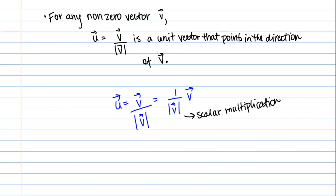This is scalar multiplication. Remember, when we do scalar multiplication, we take our vector v and we multiply it by a scalar. That either stretches it or compresses it, maybe flips it in the opposite direction, but it's still parallel to that original vector v.